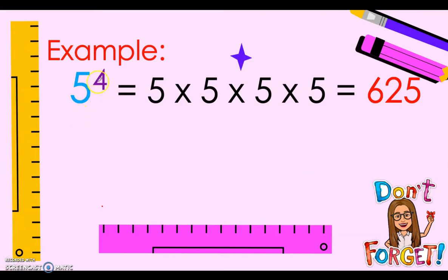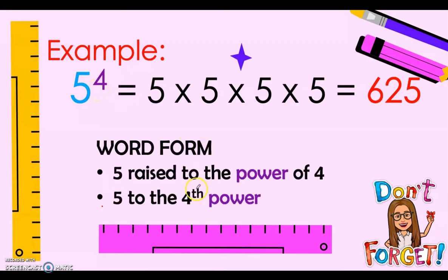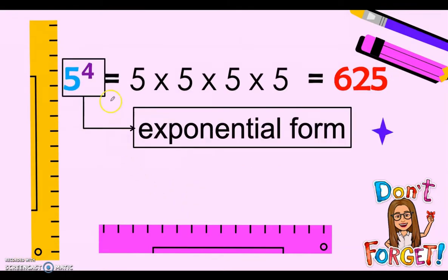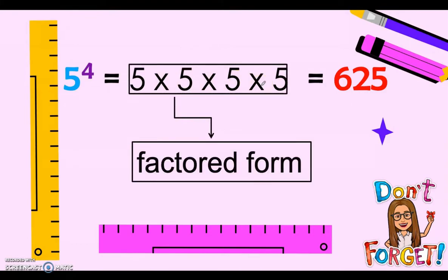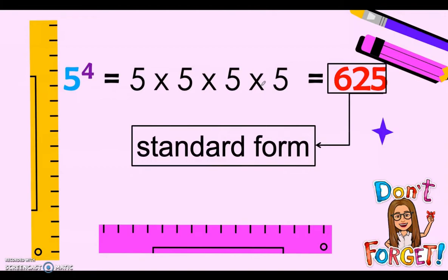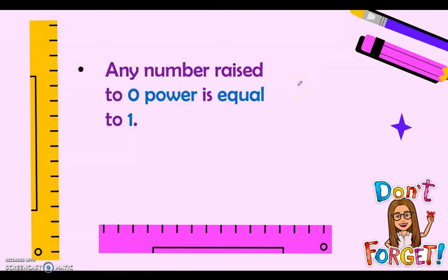Let's evaluate this example: 5 with an exponent of 4 is equal to 5 times 5 times 5 times 5, which equals 625. This can be read as '5 raised to the power of 4' or '5 to the 4th power.' The expression 5 to the 4th power is called the exponential form. The expression 5 times 5 times 5 times 5 is the factored form. And 625 is the standard form — that is the answer when you multiply 5 four times.